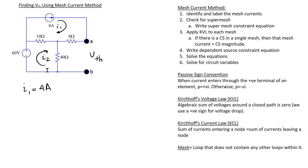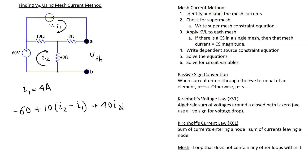For mesh 2 we apply Kirchhoff's voltage law. Going from minus to plus is a voltage rise, giving minus 60. Through the 10 ohm resistor, both I1 and I2 are flowing, but for mesh 2 we give precedence to I2, so the voltage drop is 10(I2 minus I1). Through the 40 ohm resistor the voltage drop is 40 times I2, all equal to 0. Substituting I1 equals 4, we solve for I2 equals 2 amps.